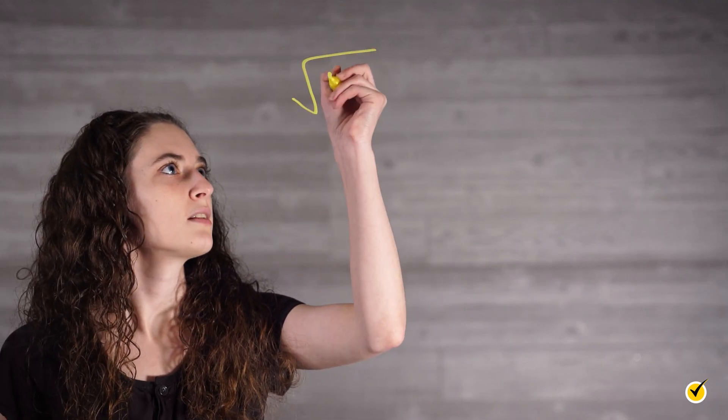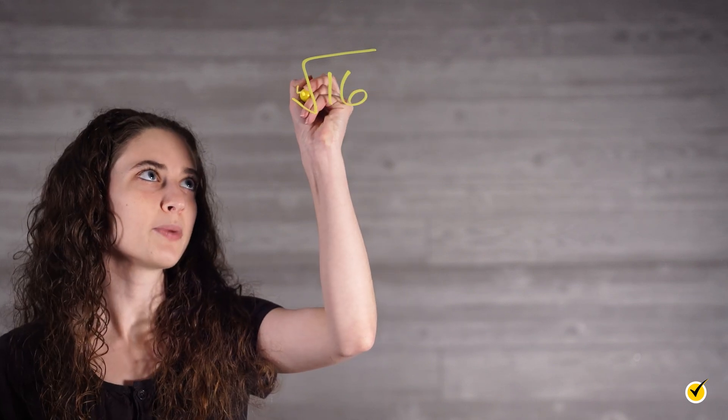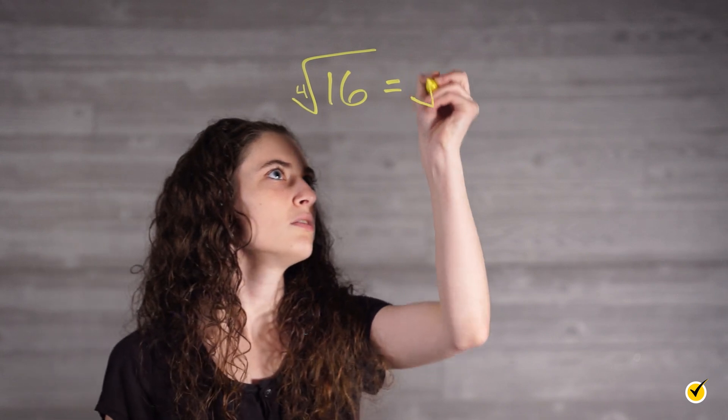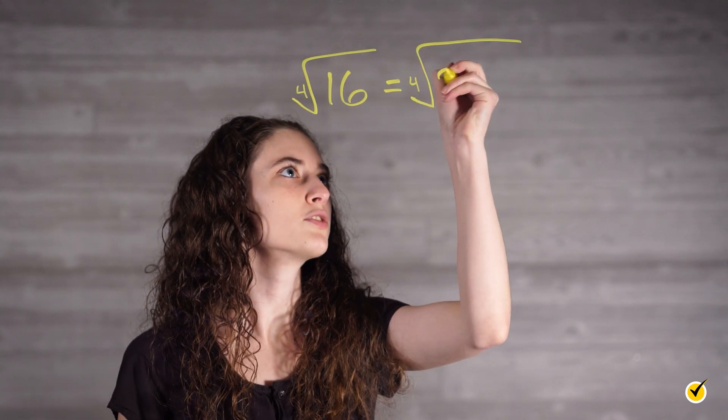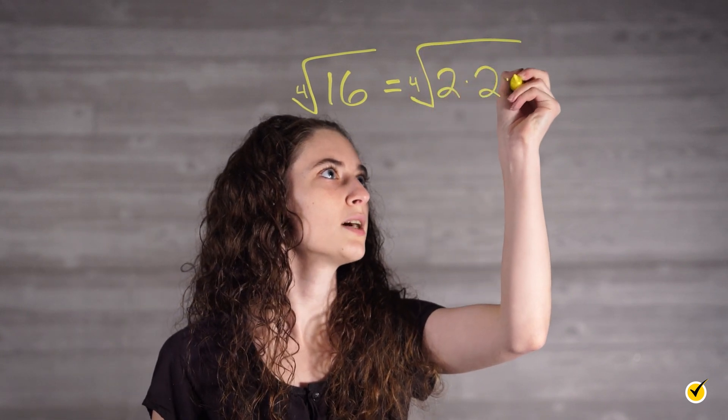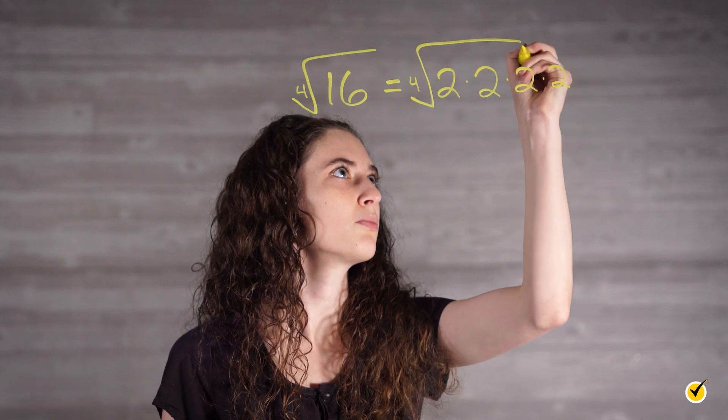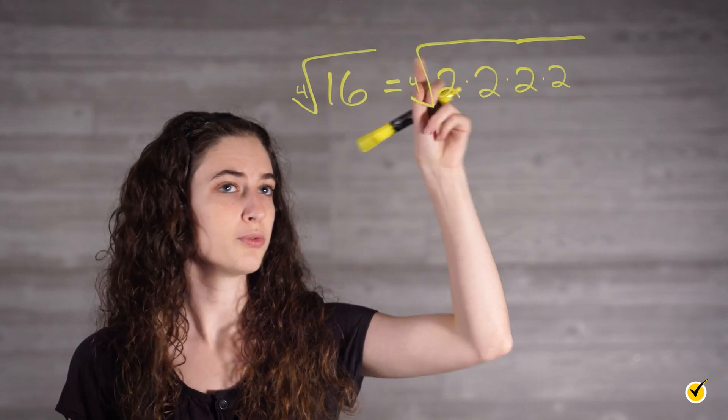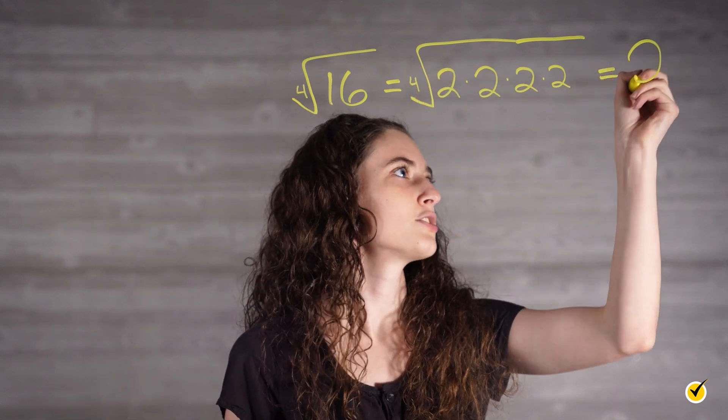This is an example of the fourth root of 16. The fourth root of 16, which you can tell is the fourth root by this little four in the hook, is equal to the fourth root of 2 times 2 times 2 times 2. Since there are four twos, we can pull those out because we are looking for the fourth root, and our answer is 2.